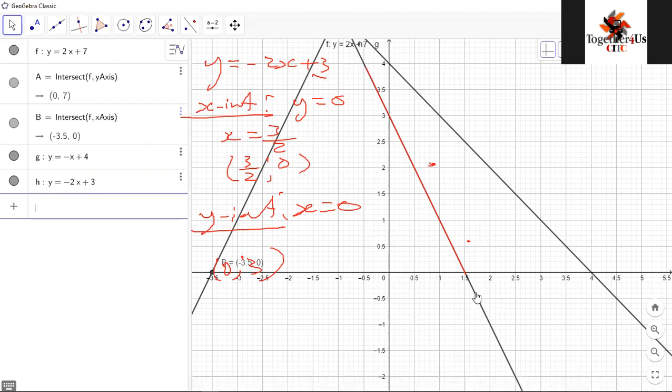I can confirm with GeoGebra if this graph is correct by just saying y equals minus 2x plus 3. You can see here is the graph. It flows exactly on my red line here. It even continues down.